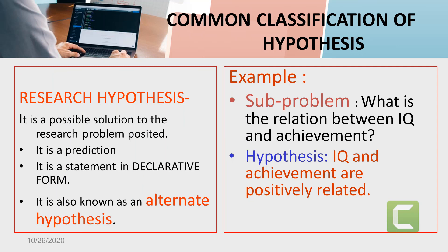Now let us discuss the common classification of hypothesis. First is the Research Hypothesis. It is a possible solution to the research problem posited. It is a prediction, stated in declarative form, and is also known as an alternate hypothesis. For example, the problem is: what is the relation between IQ and achievement? The hypothesis is: IQ and achievement are positively related.